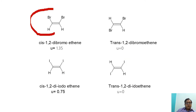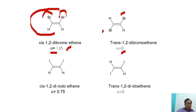In this next example, the bromine atoms are on the same side in the cis isomer, giving a dipole moment value of 1.35 D. In the trans isomer, bromine atoms are on the diagonal side, so the value of dipole moment is 0. Similarly, cis-1,2-diiodoethene has a dipole moment value of 0.75 D and its trans isomer has a value of 0.